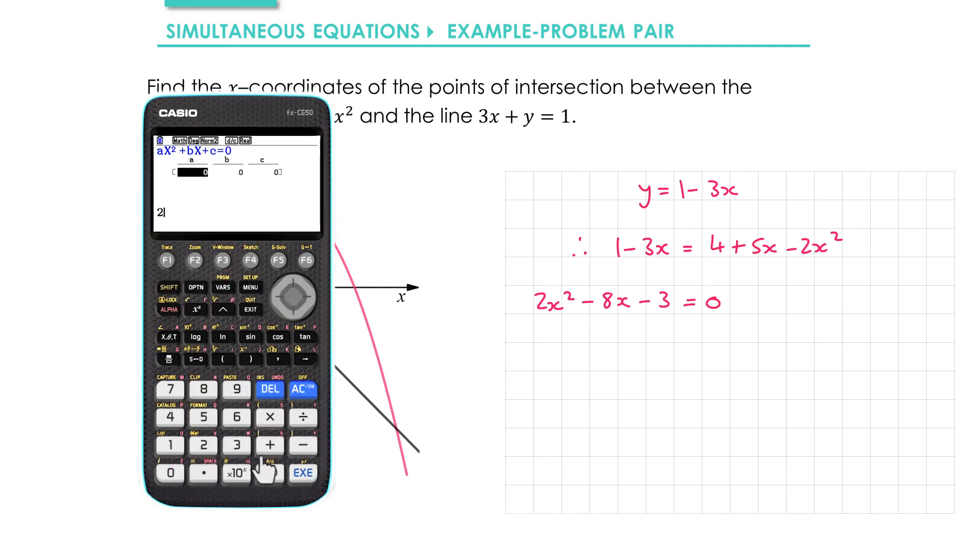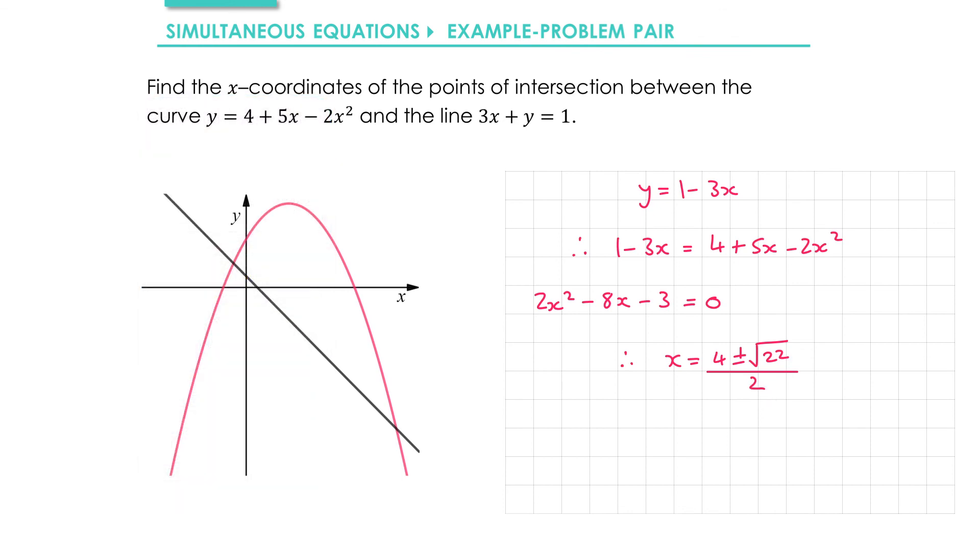Then we can pop this into our calculator and we get x equals 4 plus root 22 over 2 and x equals 4 minus root 22 over 2. Representing the two equations on the graph gives us this. So the first solution is the first intersection point and the second solution is the second intersection point.